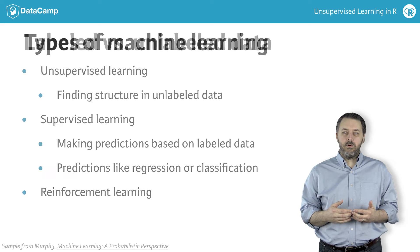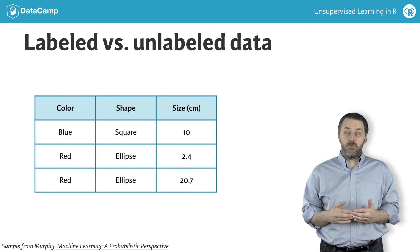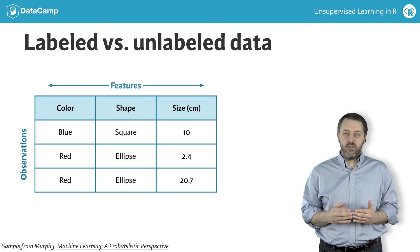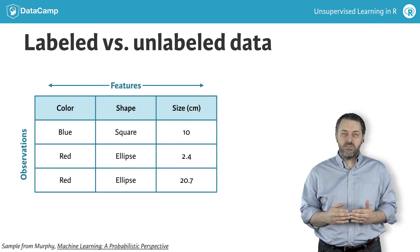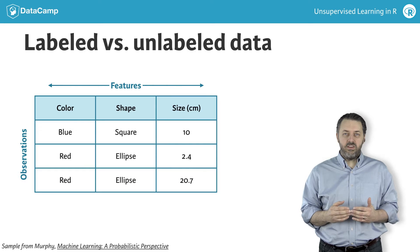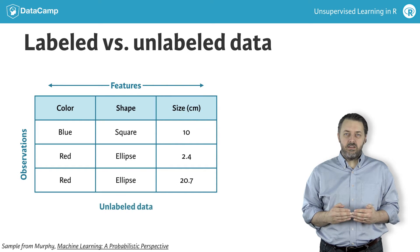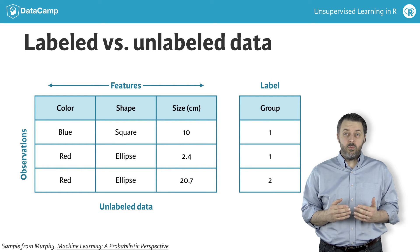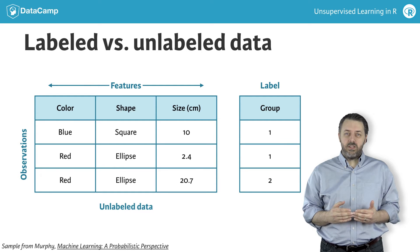Here's a quick example of the difference between labeled and unlabeled data. The table on the left is an example with three observations about shapes, each shape with three features represented by the three columns. This table on the left is an example of unlabeled data. If an additional vector of labels is added, like the column of labels on the right-hand side, labeling each observation as belonging to one of two groups, then we would have labeled data.